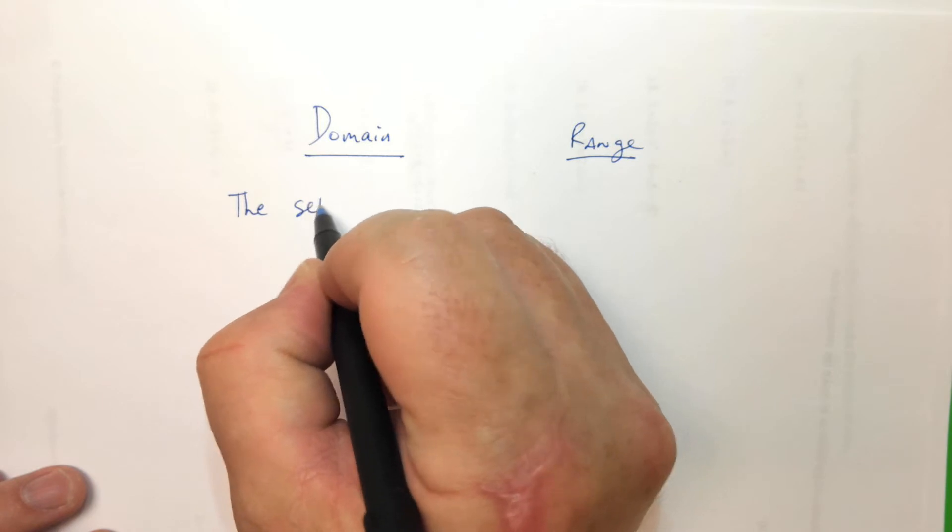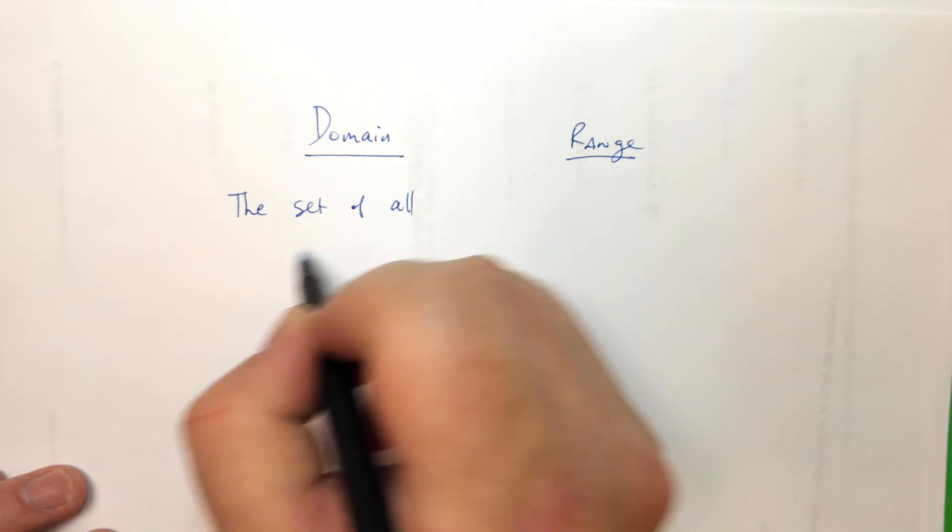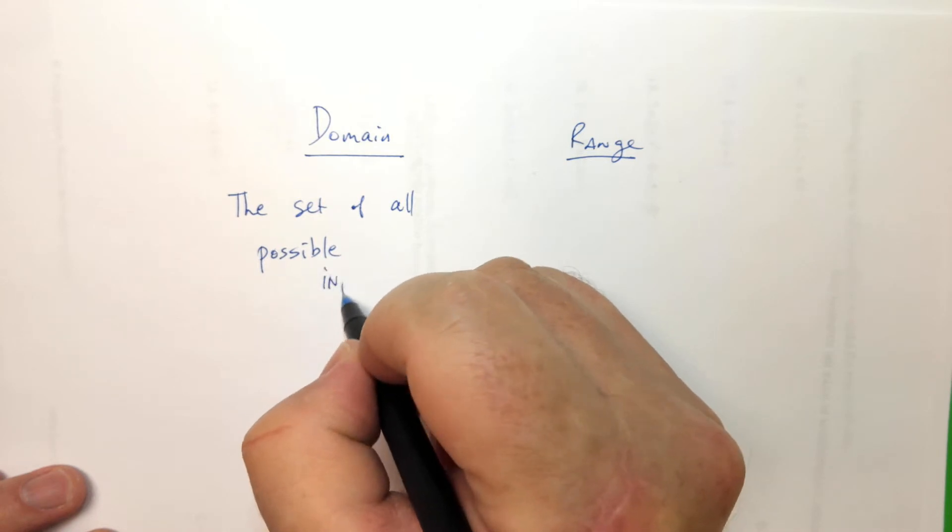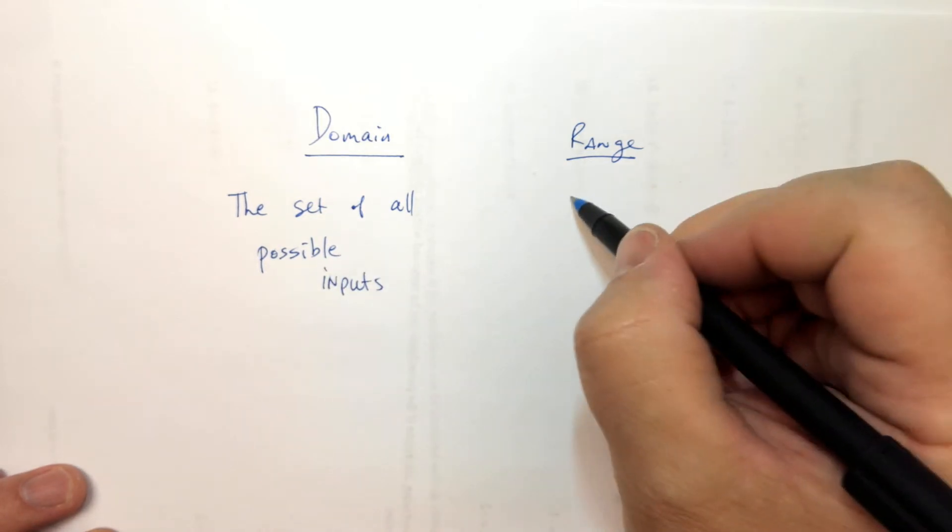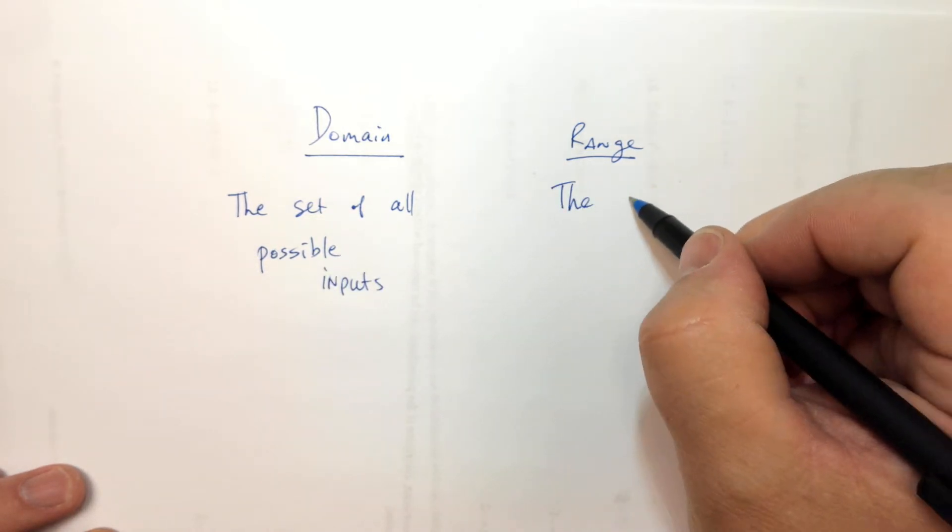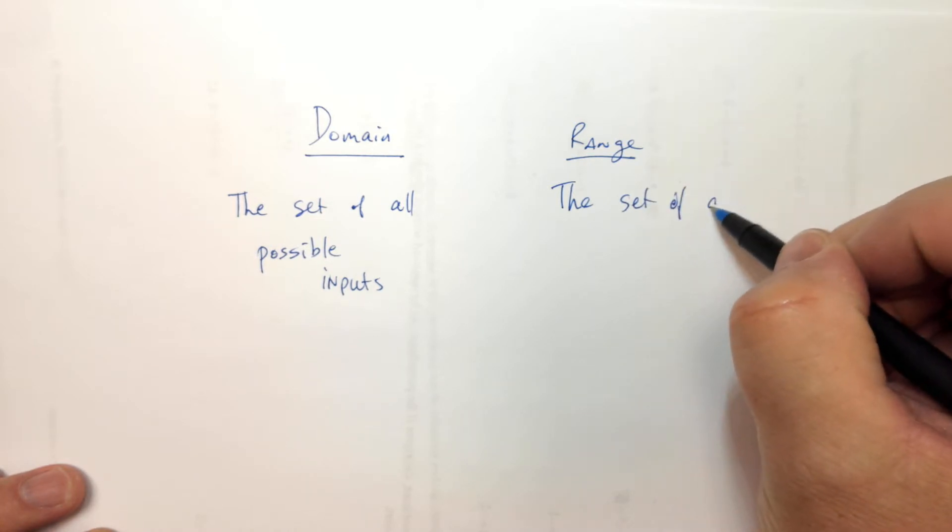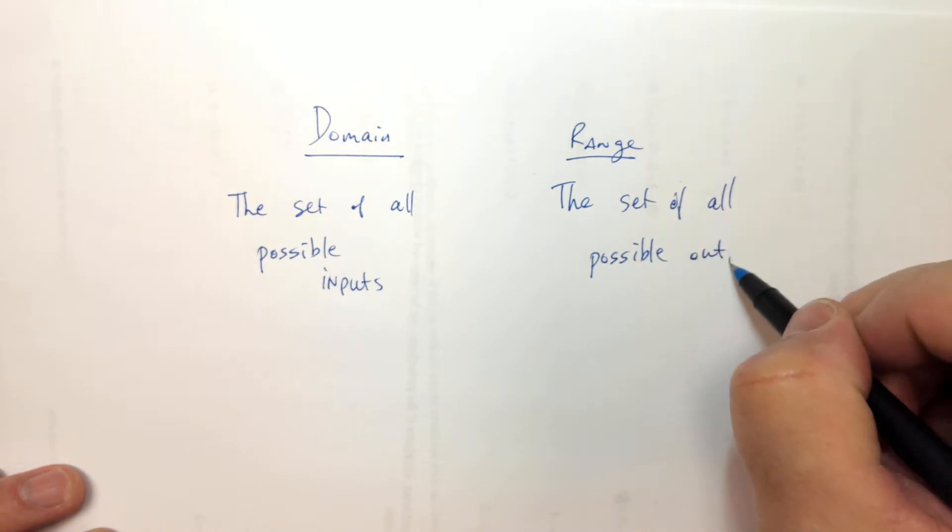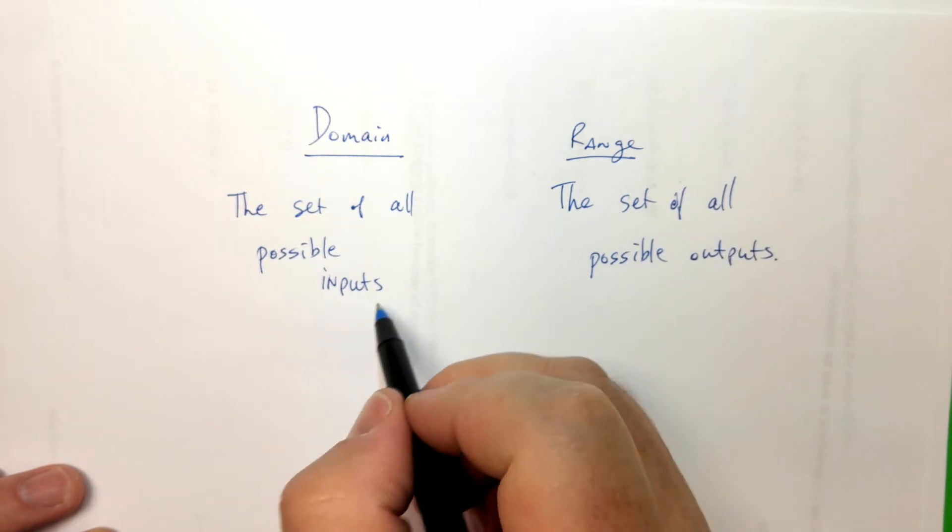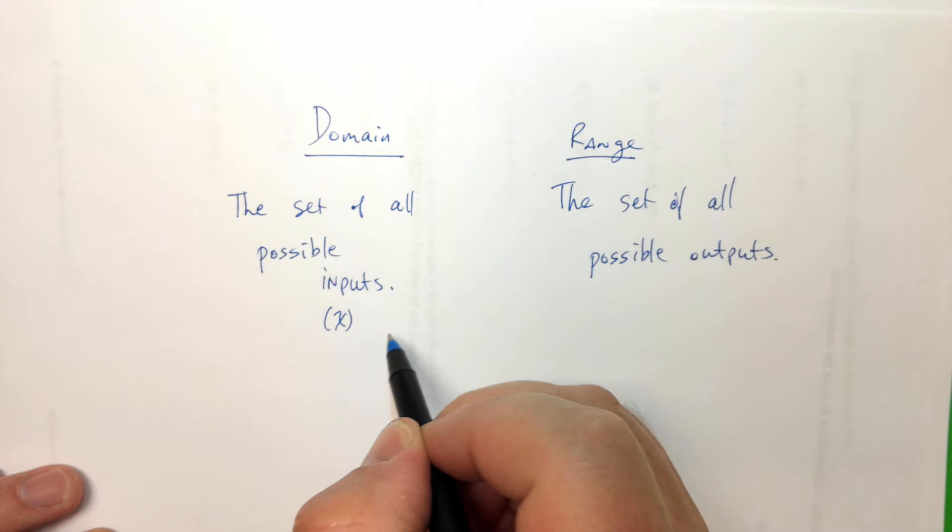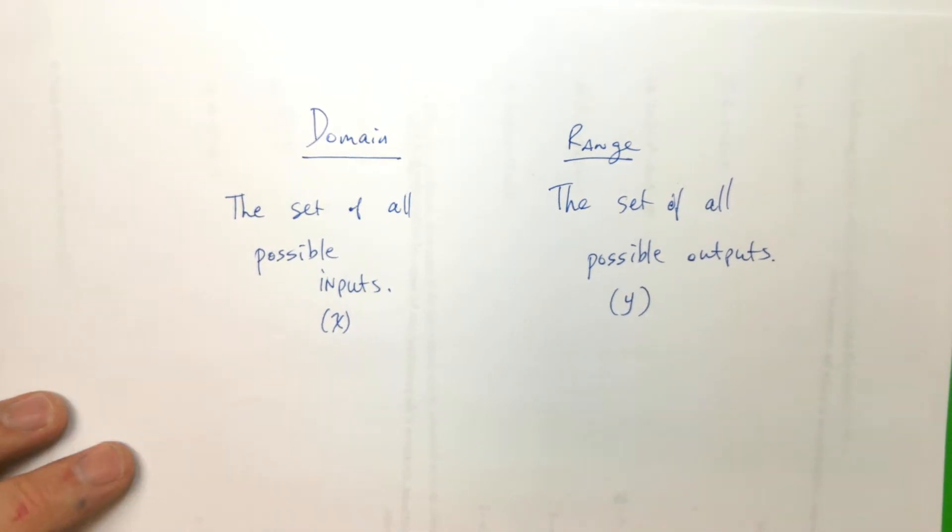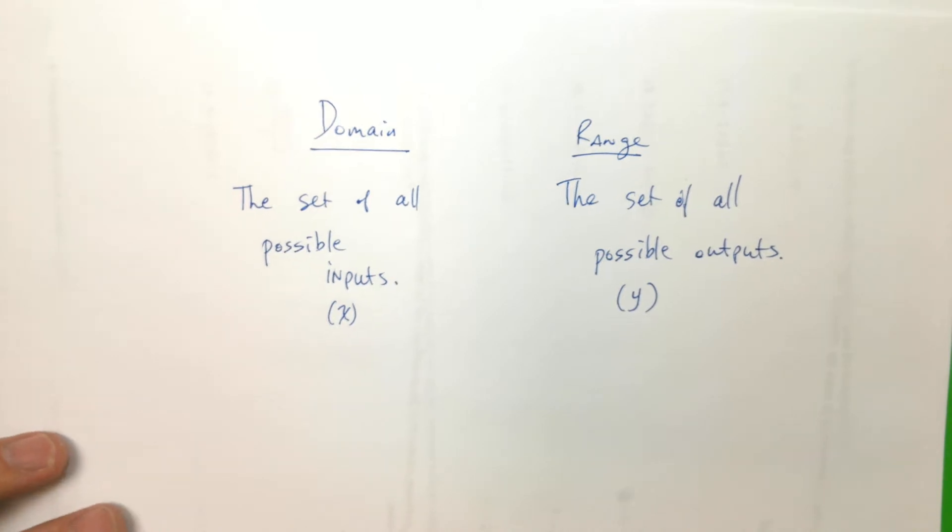Domain and range. Domain is the set of all possible inputs. And range is the set of all possible outputs. Inputs are the x's, right? And outputs are the y's.